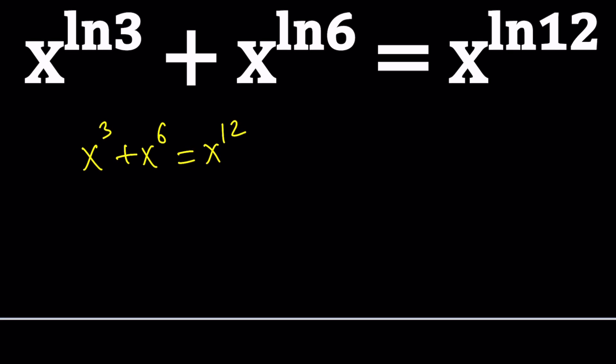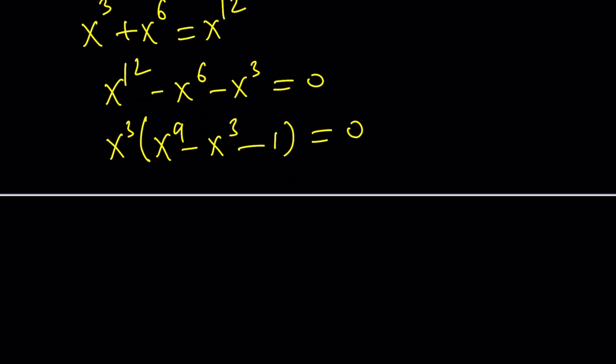So we could go ahead and try to put everything on the same side, and then find a common factor, which would be x to the third, and then look at the rest of the equation. And of course, what's nice about this equation is that powers are multiples of three. So we could easily see that x equals zero from here. That's what I meant by the obvious solution, which is also called a trivial solution.